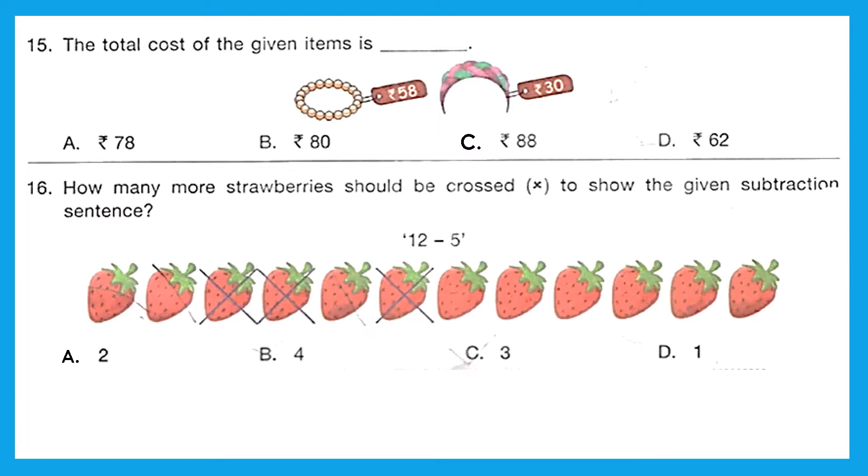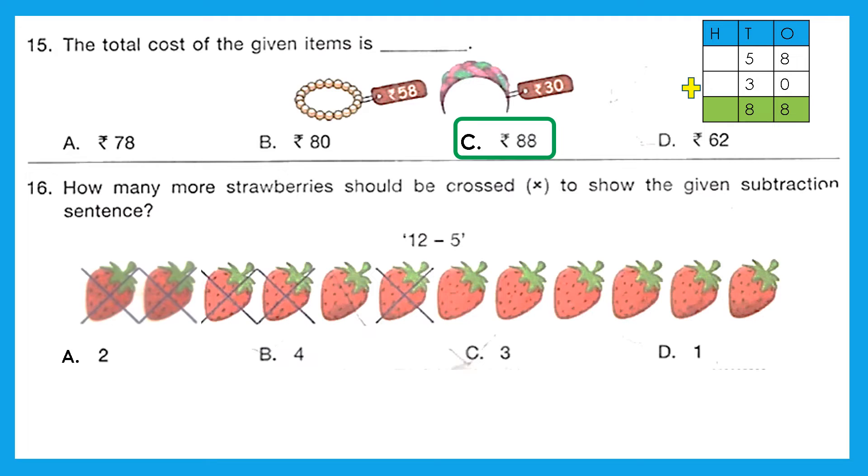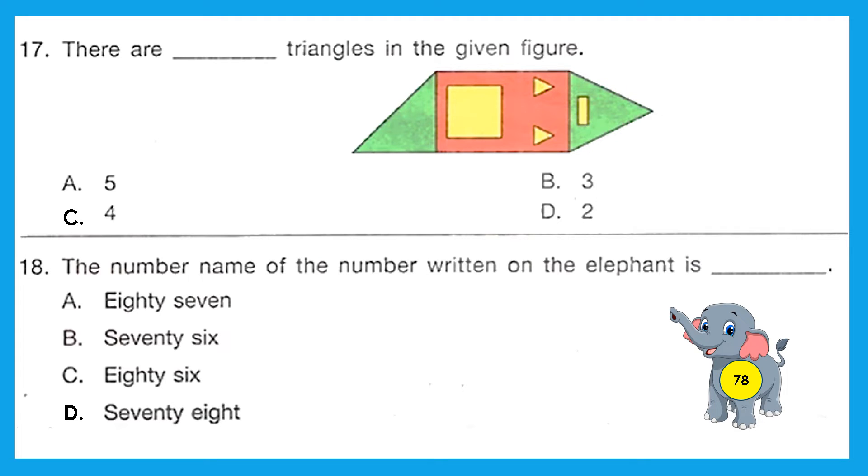Question 15: The total cost of the given items is. So there is one bracelet which costs rupees 58, then hairband that costs rupees 30. Let's add it. So 58 plus 30 equals 88. The right answer is option C, 88. Question 16: How many more strawberries should be crossed to show the given subtraction sentence? And what is that sentence? It is 12 minus 5. So 5 should be crossed, right? Now how many are crossed? Only 3. So we will cross 2 more. Okay, and our right answer is option A, 2.